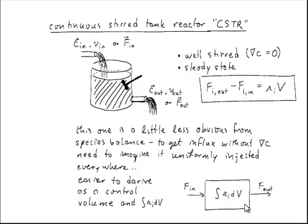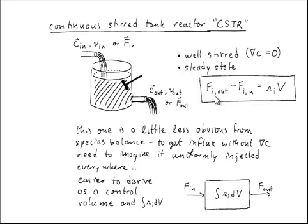When you do this integration, you find that if everything is well stirred, then the reaction rate is the same everywhere, and we just multiply the volume of the reactor by the reaction rate. We get that that must be equal to the flow at the outlet minus the flow at the inlet of species i.